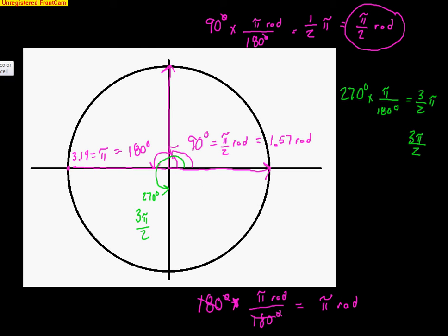Lastly, going a full circle — 360 degrees — we should already know from this video that 360 degrees is 2π radians, just a little bit over 6. So we always have the exact answer like π over 2, and the approximate answer like 1.57. We prefer the exact, but it's good to understand where the approximate comes from.